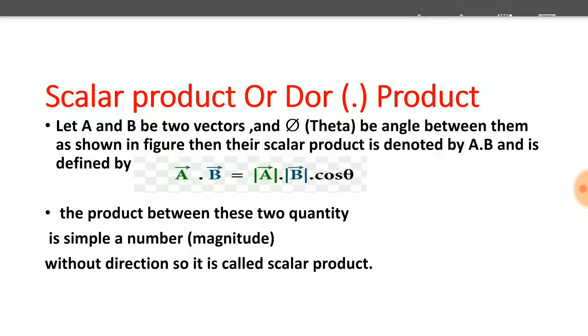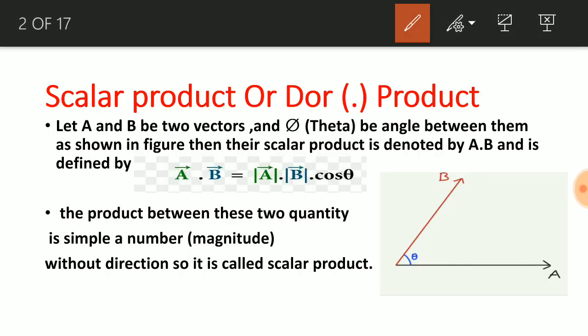Now let us see what is scalar product. If vector A and vector B have angle theta between them, then the scalar product is denoted by A·B and defined as A·B = AB cosθ — that is, the magnitude of vector A times the magnitude of vector B times cosθ. This result is simply a number, a scalar quantity, which is why this product is called the scalar product or dot product.